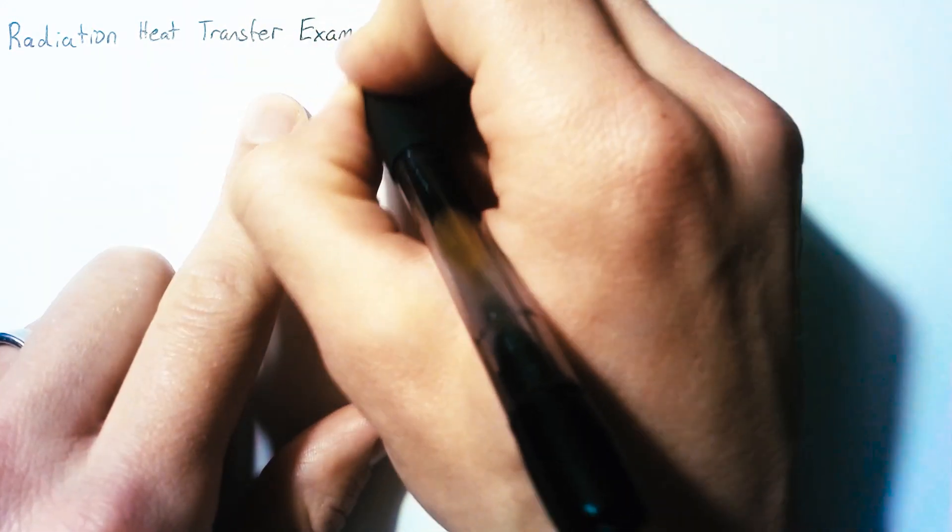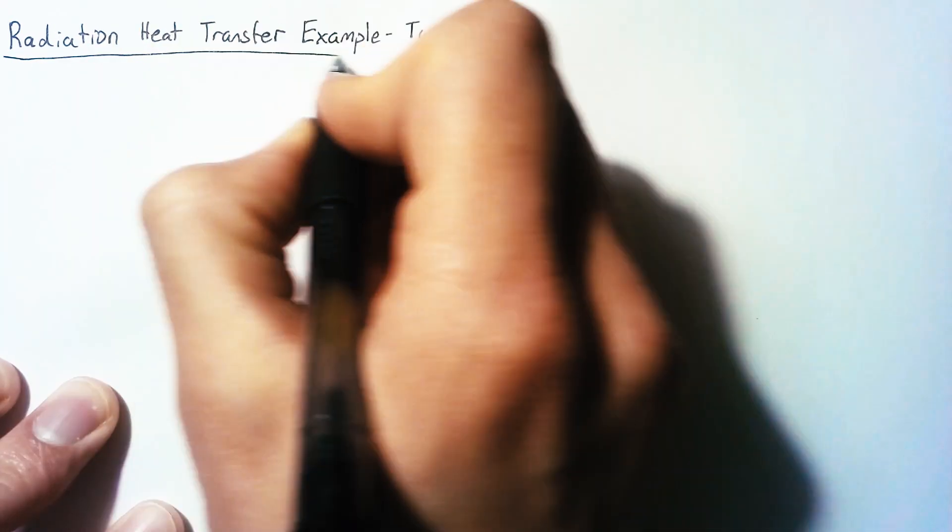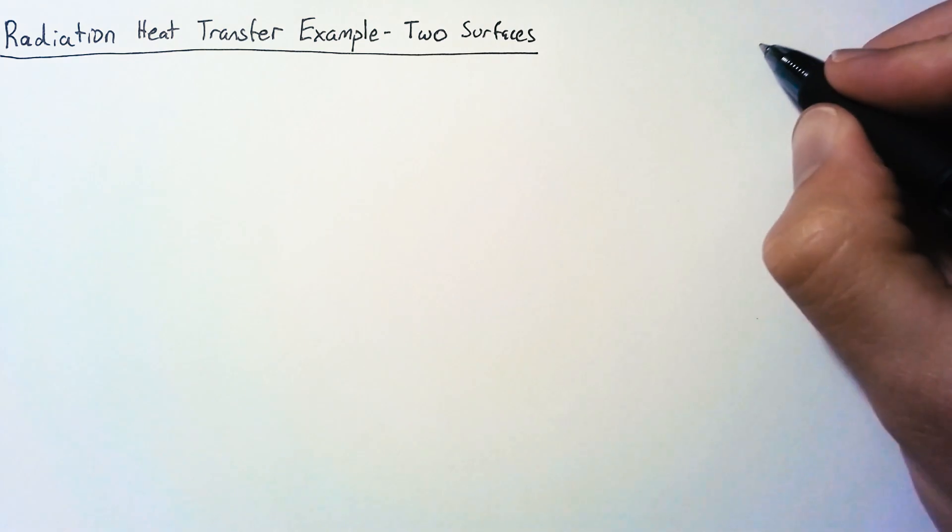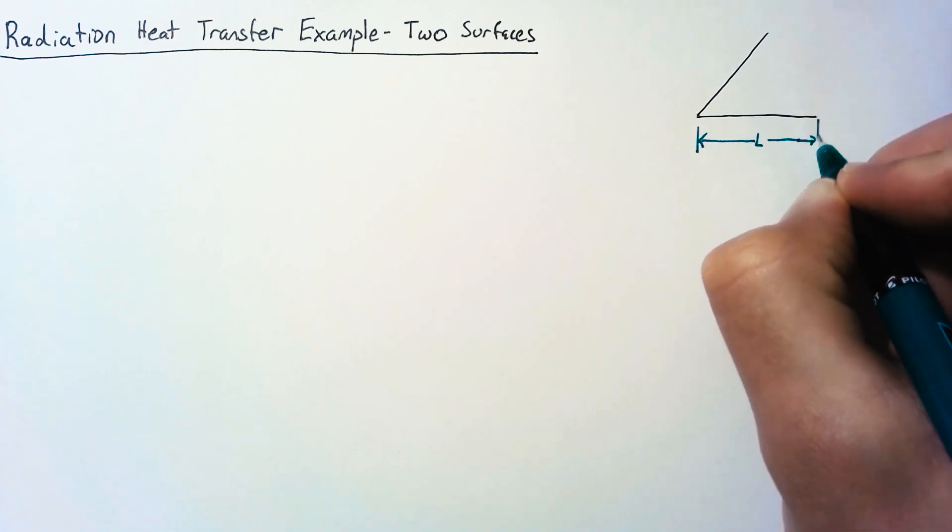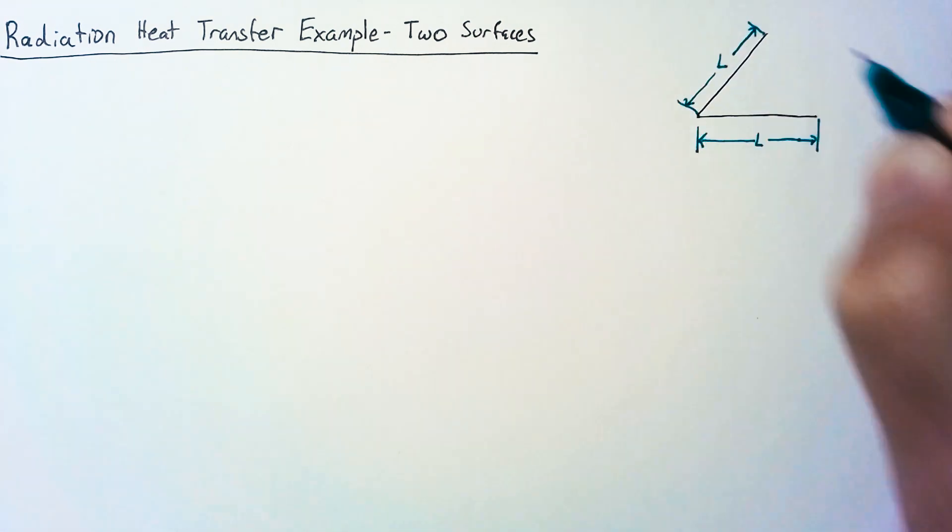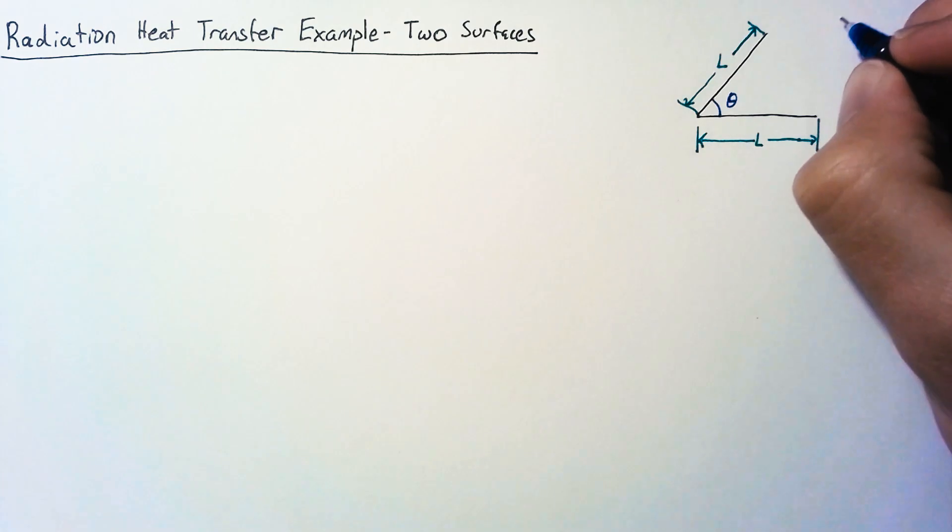To keep things simple for now, we're only going to consider two surfaces in 2D. Our two surfaces are going to have equal length, and they're going to be separated by an angle theta. Now we're going to let theta equal 60 degrees.